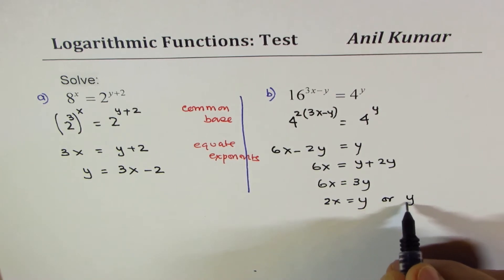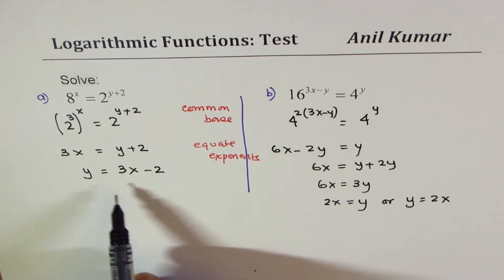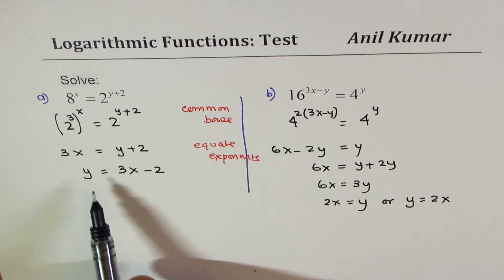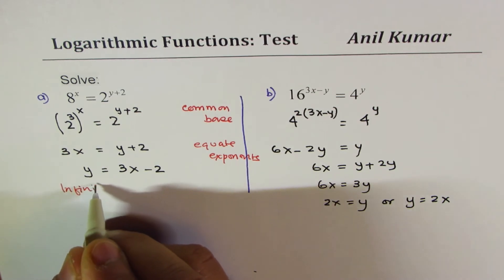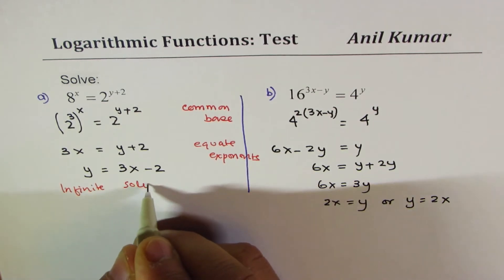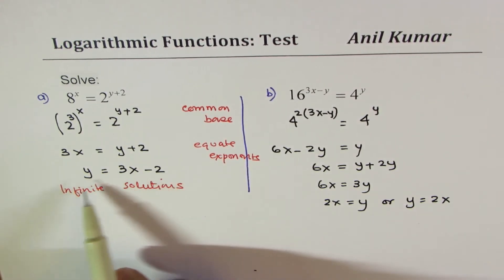In both these equations, we get values of x and y dependent on one another, or we could say y is twice x. That really means that they have many solutions. So a line can represent a set of solutions. We can conclude from here that we have infinite solutions for both these.